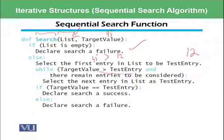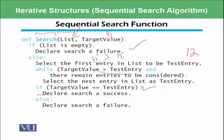This statement keeps on executing until we find that 45 is equal to 45 and we declare the search result as a success.